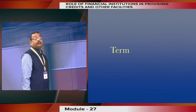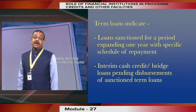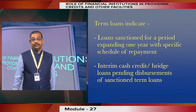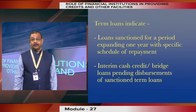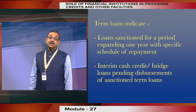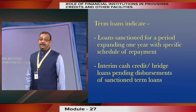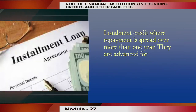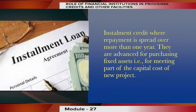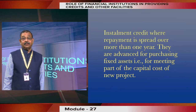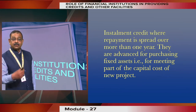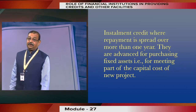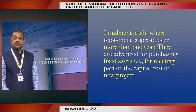Term loans indicate loans sanctioned for a period exceeding one year with a specific schedule of repayment. Interim or bridge loans may be provided pending disbursement of sanctioned term loans, so that the entrepreneur's activities do not suffer. Installment credit involves repayment spread over more than one year with a fixed installment amount, advanced for purchasing fixed assets — similar to how individual customers avail bank loans for purchasing vehicles.